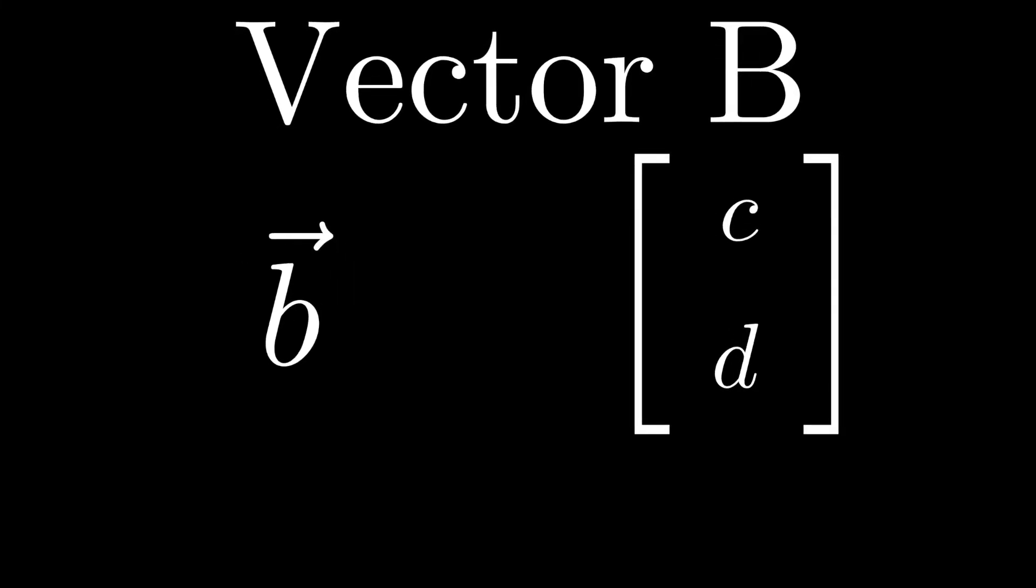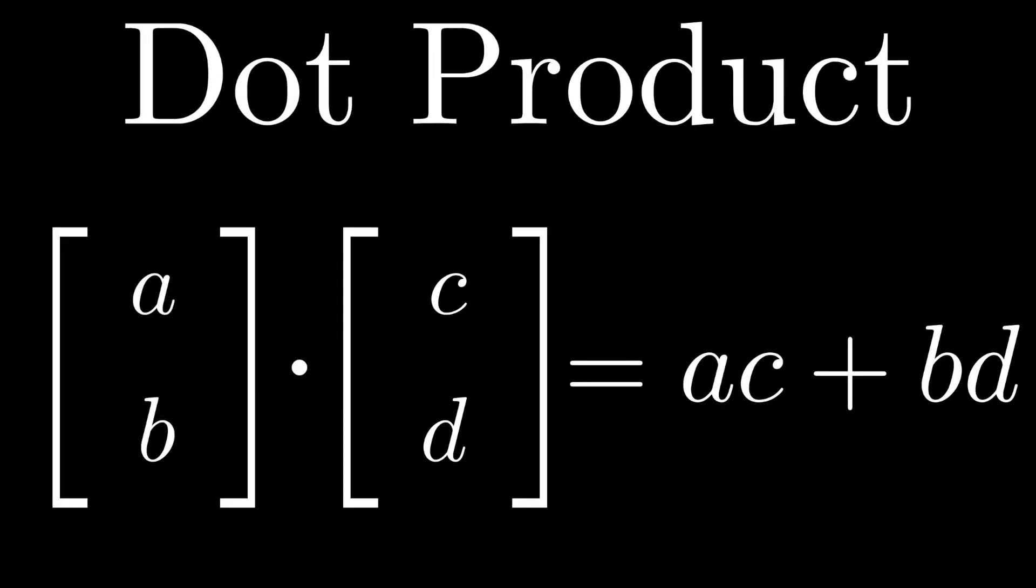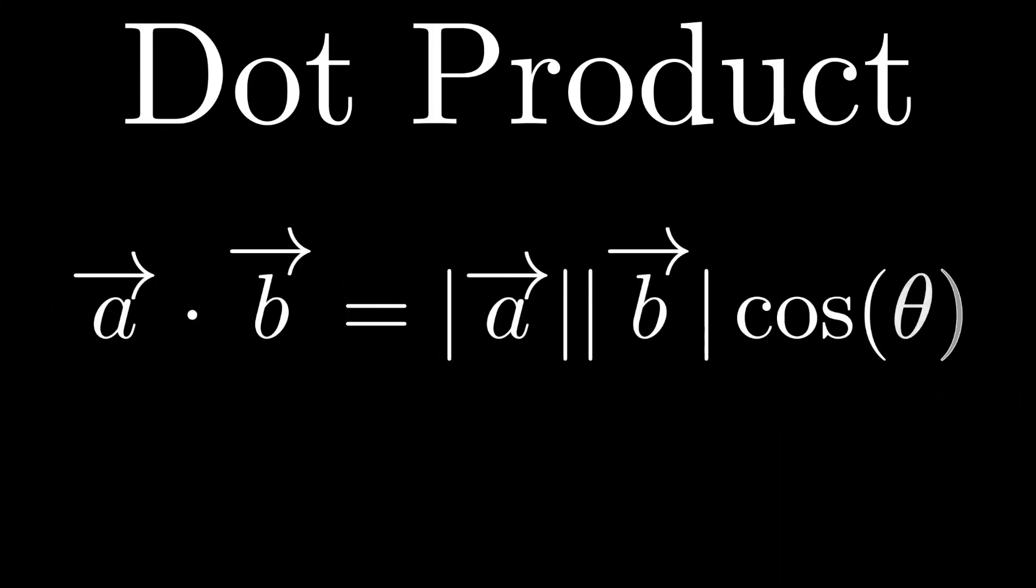The dot product is defined as a times c plus b times d for vectors with components a, b and c, d. It's also defined as their magnitudes multiplied together times cosine of their angle between them.